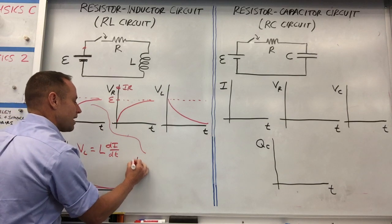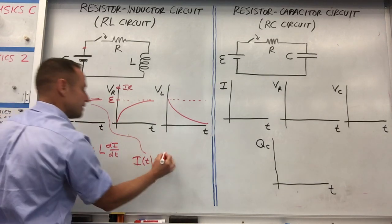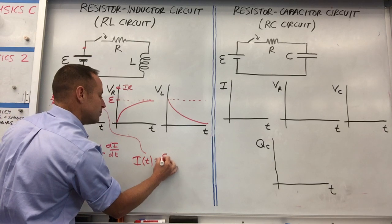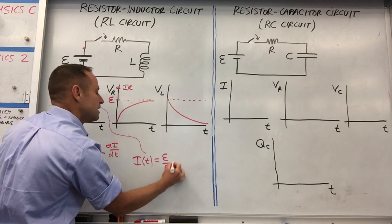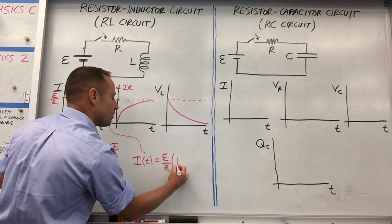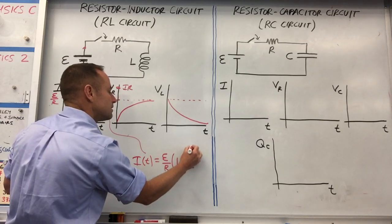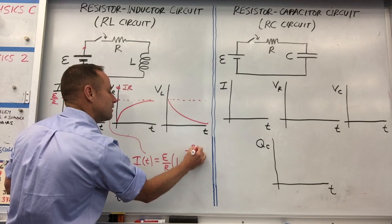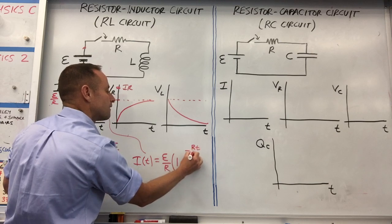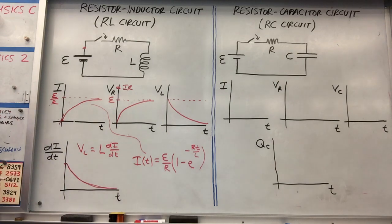For the RL circuit, the current as a function of time follows an exponential approach. It's the value it approaches times one minus an exponential: I(t) = (ε/R)(1 − e^(−Rt/L)).